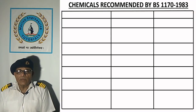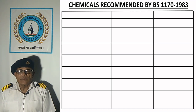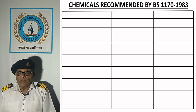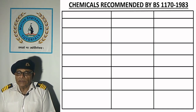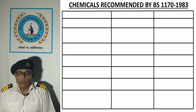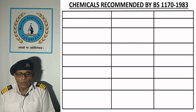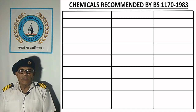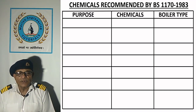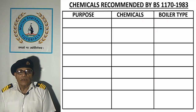Chemicals recommended by British Standard BS 1170 of 1983. This table describes the treatment of water for marine boilers as per recommendation of European Standard BS 1170 of 1983. We will see the purpose for which the treatment is carried out, the types of chemicals, and the type of boiler.